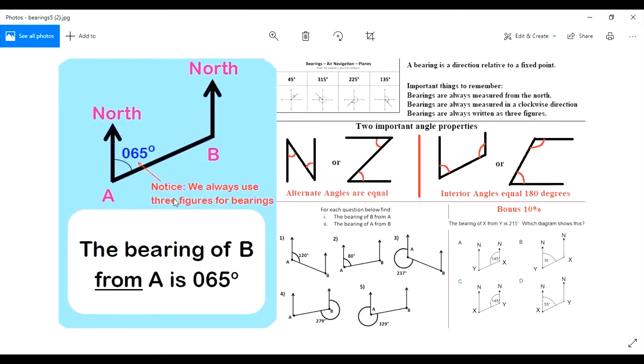Hopefully I've been clear on that. Here we have an example of a bearing. It says we always use three figures—yeah, that's technically how it's supposed to work. Here we have 65 degrees, and the way we read it is: it is a bearing of B. This angle...